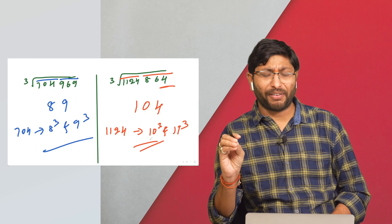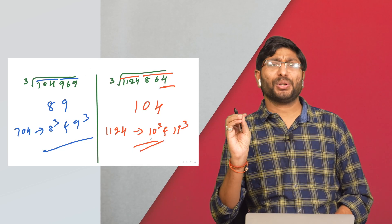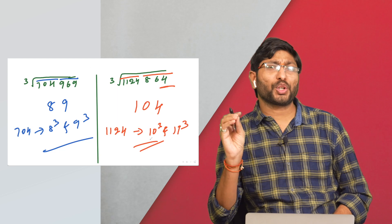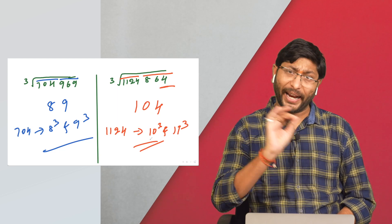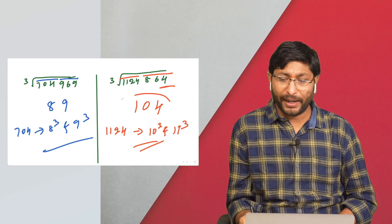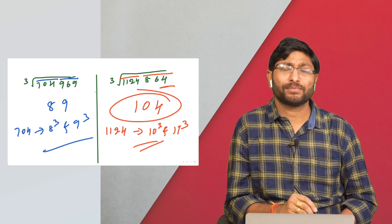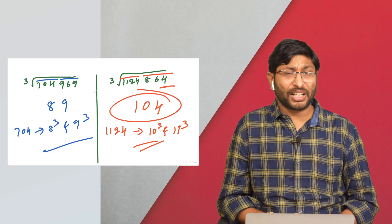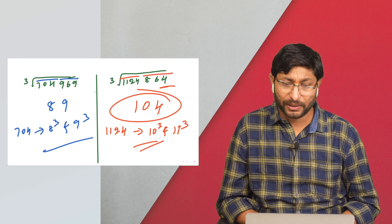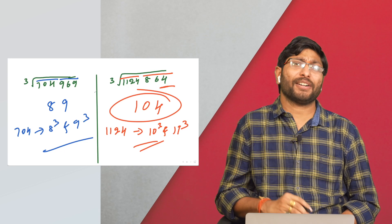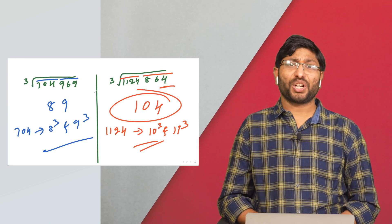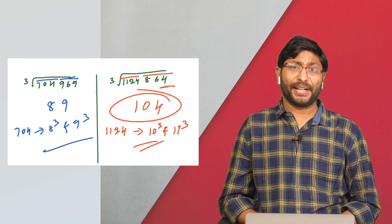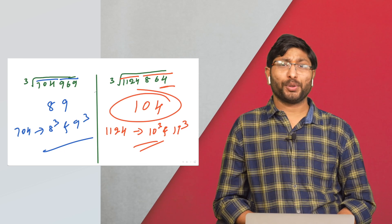The very simple fact is: if you know 1³ to 20³, you can solve any cube root in one step, in less than 5 seconds, even for 7-digit numbers. Thanks a lot for watching. I hope you are enjoying.